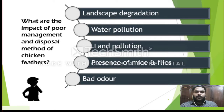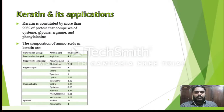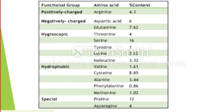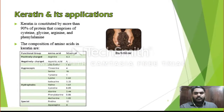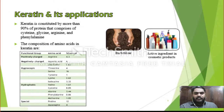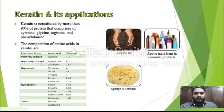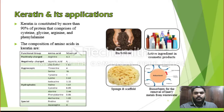However, waste chicken feathers can be treated well and will generate massive wealth, not just economically but environmentally too. The table shows the composition of amino acids in keratin. The importance of keratin is highly regarded by professionals all over the globe. Some of the applications are in the production of bio-fertilizer, as an active ingredient in cosmetic products, for production of sponge and scaffolds, and as a biosorbent for the removal of heavy metals from wastewater.